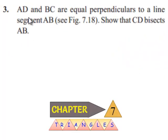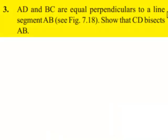Now, moving on to the third question: AD and BC are equal perpendiculars to a line segment AB. Show that CD bisects AB.